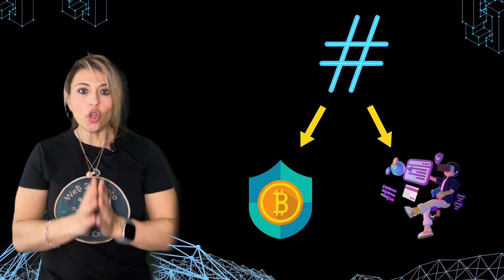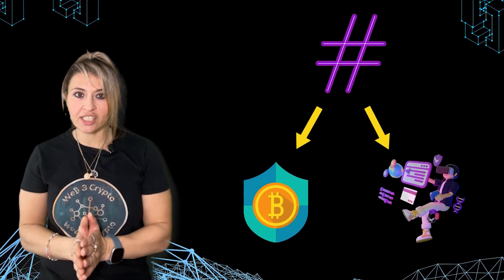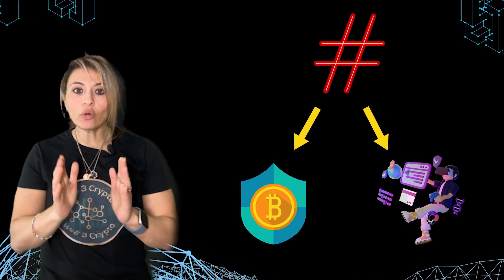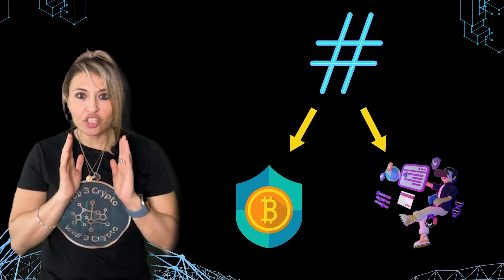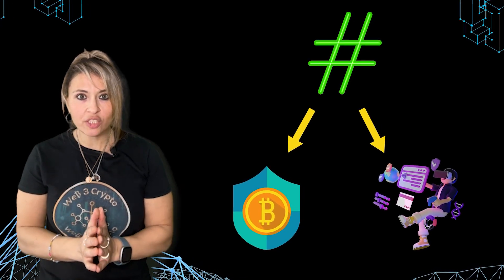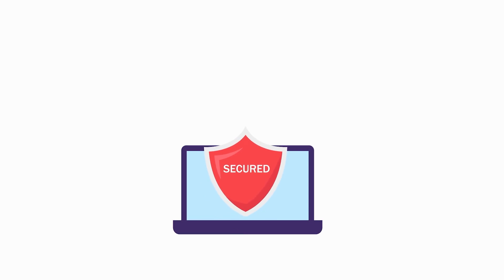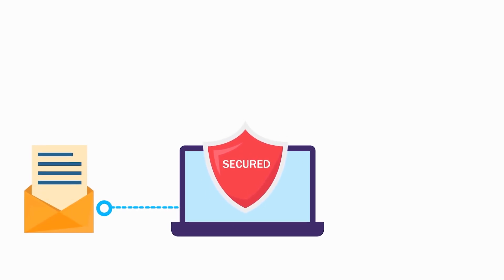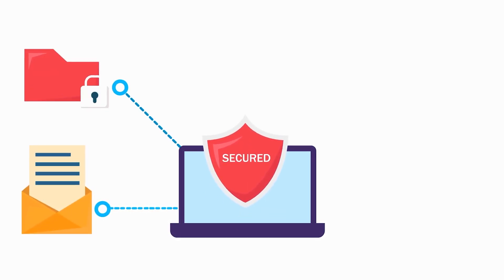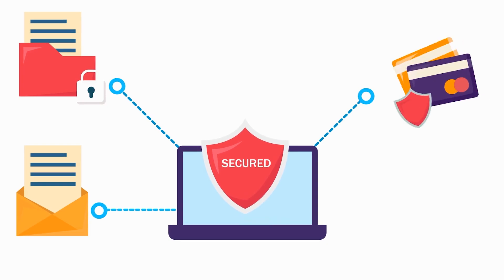Cryptographic hashing not only keeps Bitcoin transactions secure, but also underpins the trustworthiness of much of our digital world. Understanding it gives you a glimpse into the technical backbone of how secure digital platforms operate.